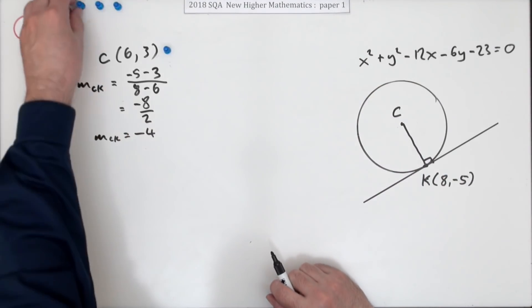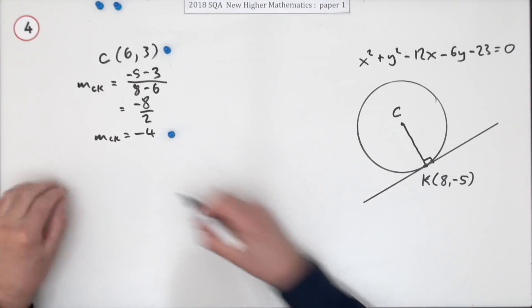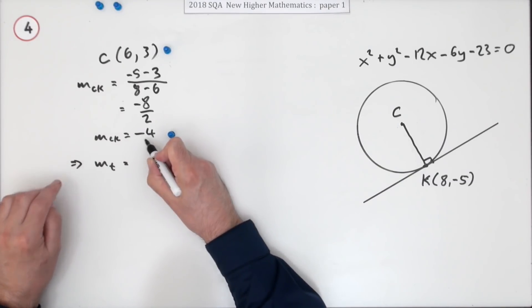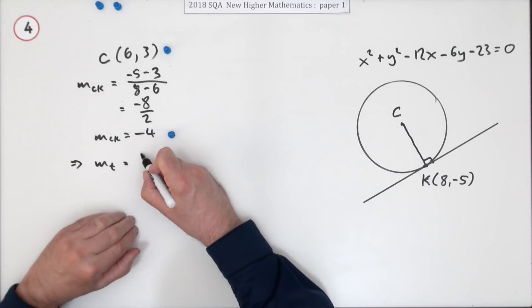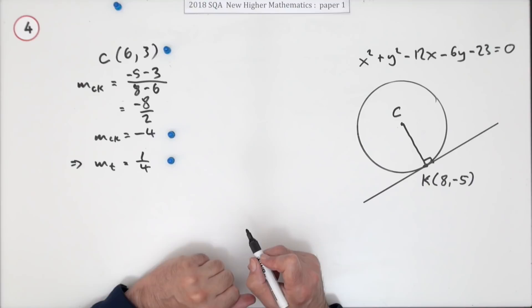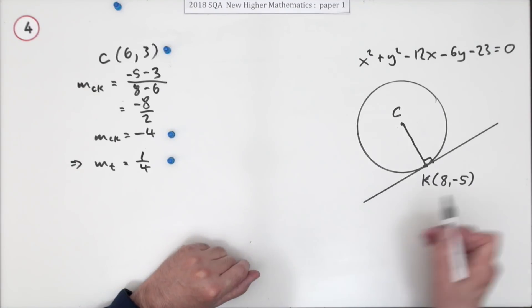That means the gradient of the tangent is going to be the negative of the reciprocal, so that's positive a quarter. That's worth a mark.